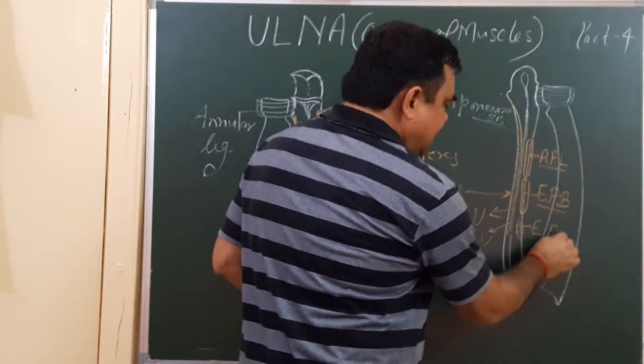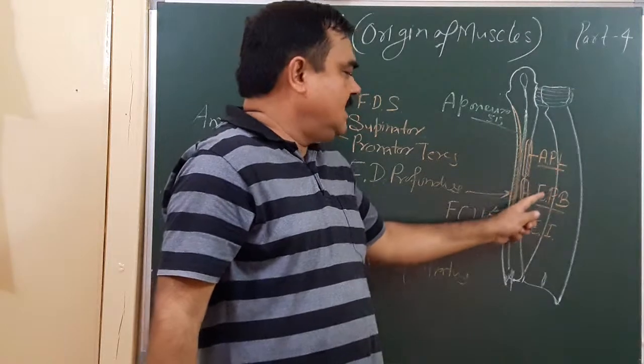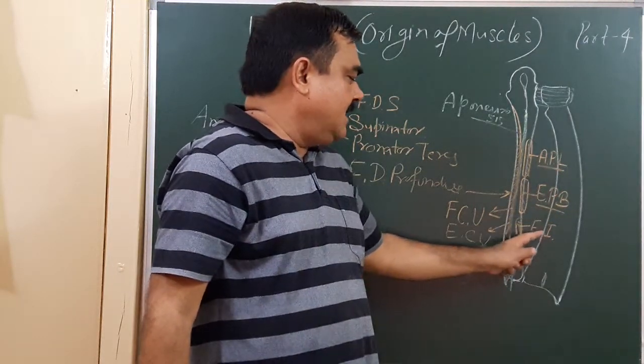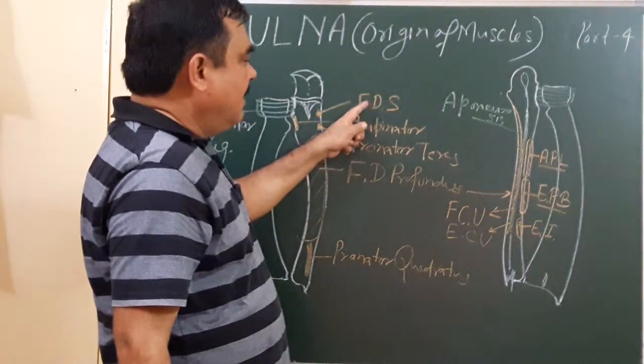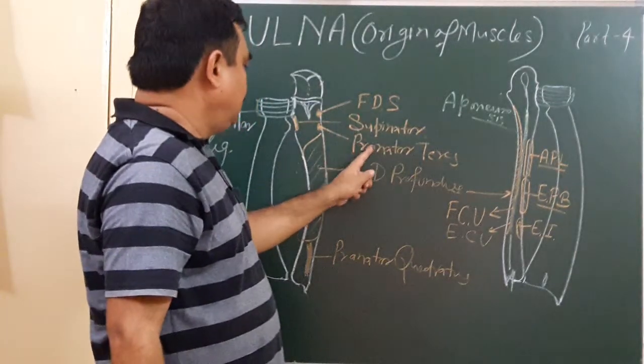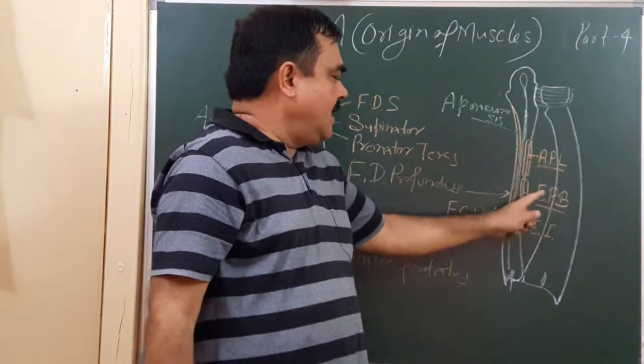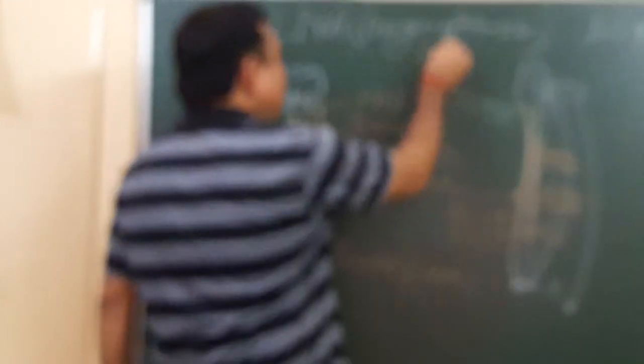So here you can see the number of muscles that take origin from the ulna: one, two, three, four, five, six, seven, eight, nine, ten. So ten muscles take origin from the ulna.